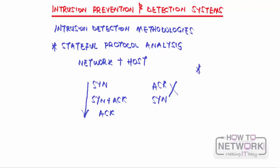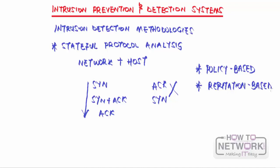There are other detection methodologies like policy-based and reputation-based detection. Many IDS systems do not use just one type — they can combine more than one. You can have an IPS that uses stateful, anomaly, and signature-based detection together, making them hybrid systems. Even Cisco's implementation of the IPS is hybrid.